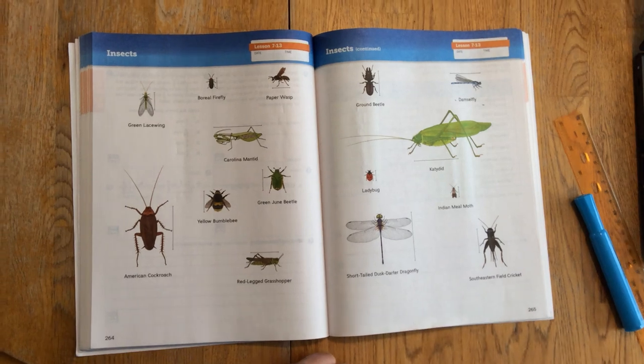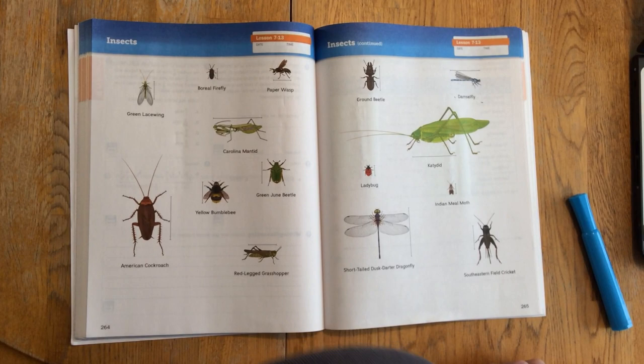Hi, it's Mr. Wasserman, and today we're going to be measuring the lengths of insect bodies. We are in our math journals pages 264 to 265 and we'll be on pages 266.